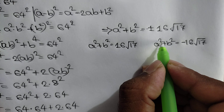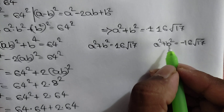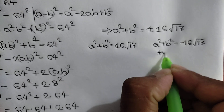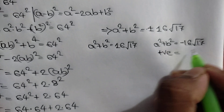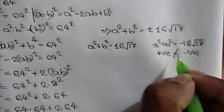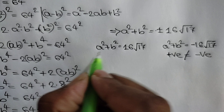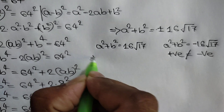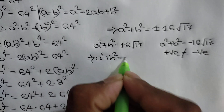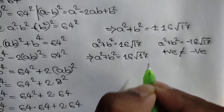Note that any number a squared is positive, and any number b squared is positive, so positive plus positive will be positive. But the negative value is a negative number, so positive cannot equal negative. Therefore the negative solution is rejected. So a squared plus b squared is equal to positive 16 square root of 17.